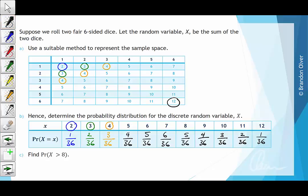Now that we have our probability distribution, we can answer part C: find the probability that x is greater than 8. If x is greater than 8, that means it is 9, 10, 11, or 12. Adding up these probabilities: 4/36 plus 3/36 plus 2/36 plus 1/36 gives us 10/36, which simplifies to 5/18.